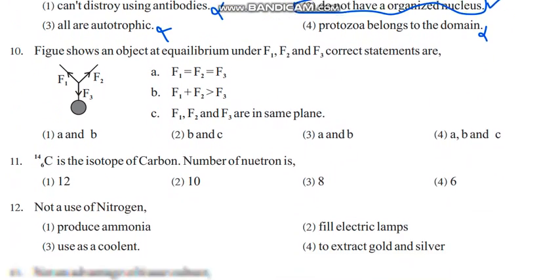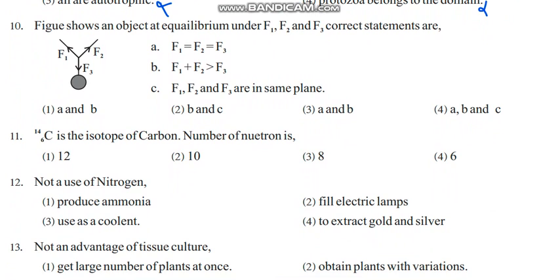Figure shows an object at equilibrium under F1, F2, and F3 forces. Correct statements are: the object is at equilibrium under three forces. If you add F1 and F2 it should be equal to F3, and they should all be in the same plane. So C is correct. B can't be - it should be equal. If all three forces are equal to each other, equilibrium can also occur. So a and c are the most suitable answers. C is correct - a and c only should be correct ones.